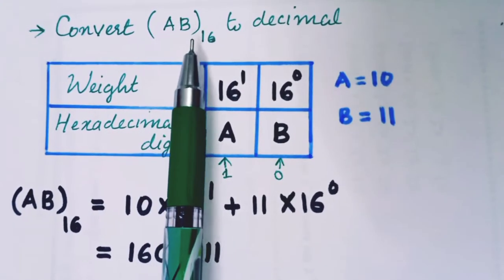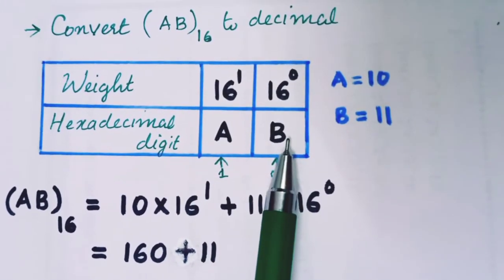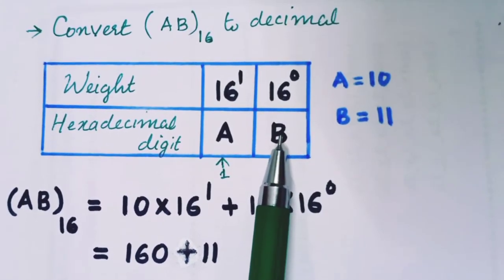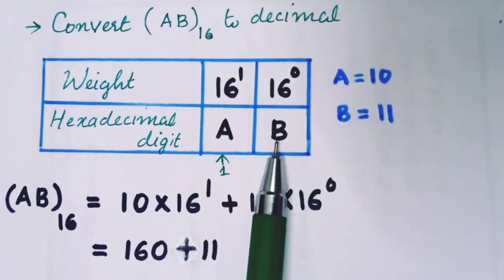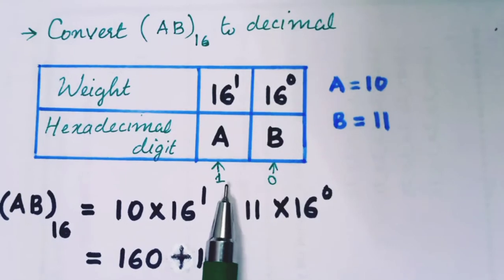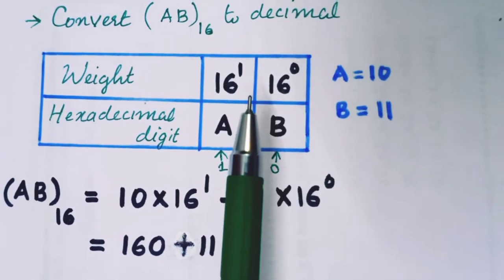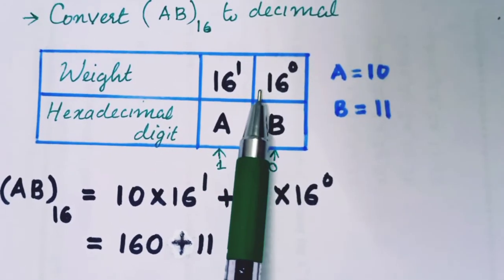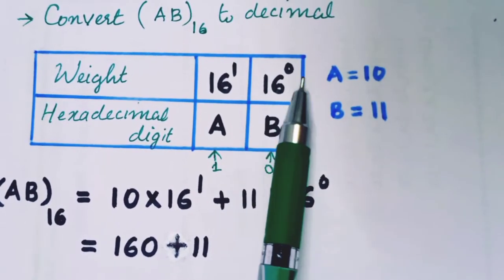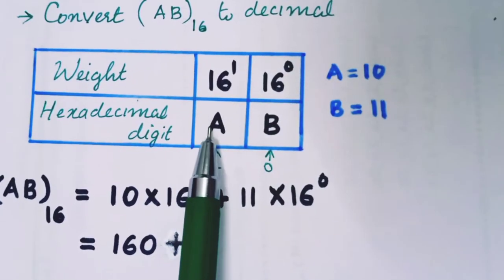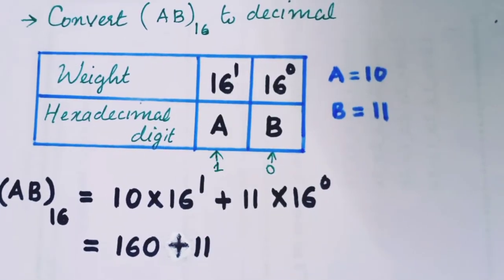We have two digits: A is one digit and B is one digit. B is at position 0, so its weight is 16 raise to 0. A is at position 1, so its weight is 16 raise to 1. We enter these positions and weights into our conversion table.